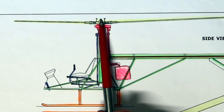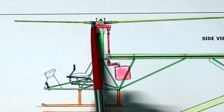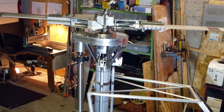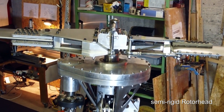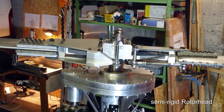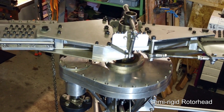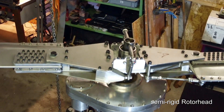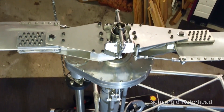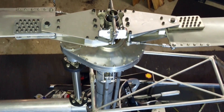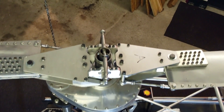On top of the helicopter is the main rotor head. This is a semi-rigid rotor head. This type of rotor head does not have individual flapping or drag hinges, but provides for flapping and lag motion. As one blade flaps up, the other blade flaps down.